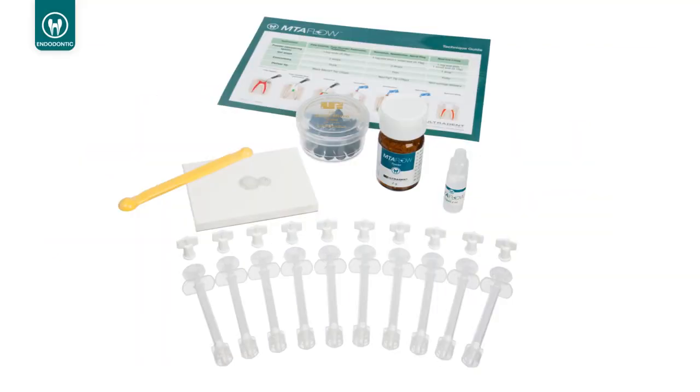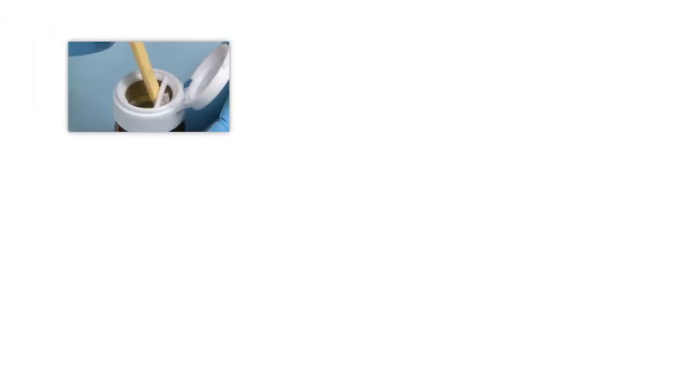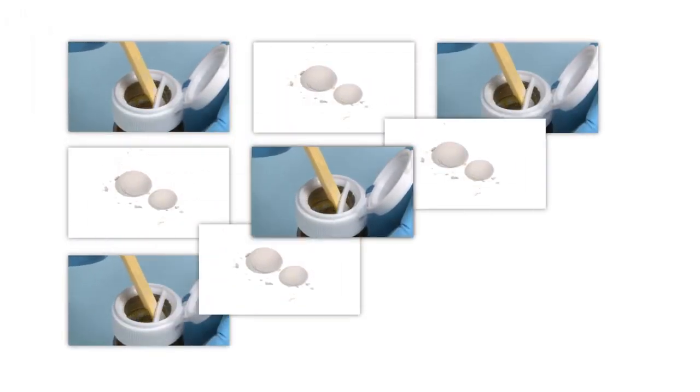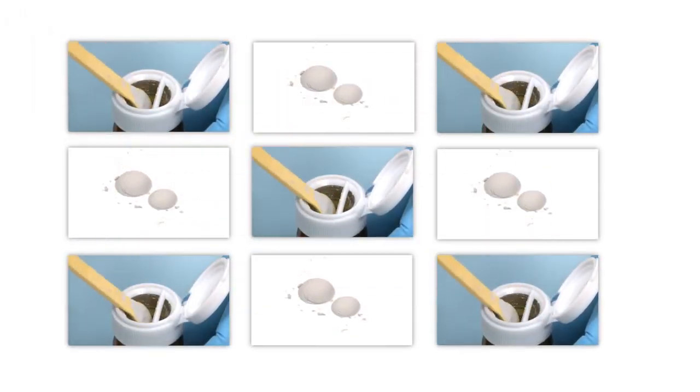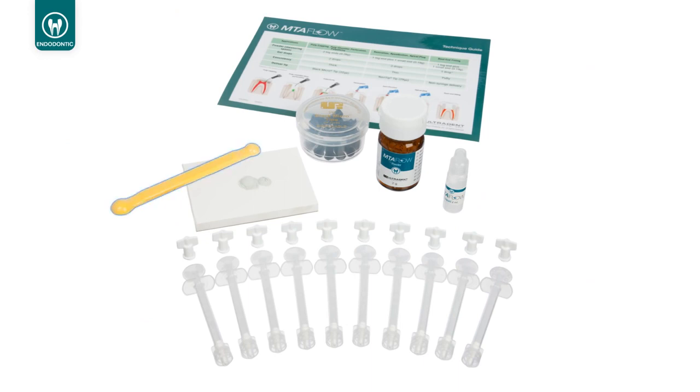The MTA Flow kit also includes the essential tools needed to mix and deliver the cement. The kit contains enough MTA powder and gel to complete 8 to 10 applications. The kit also includes a measuring spoon, mixing pad, 10 skinny syringes, 10 luer lock caps, and 20 black micro tips.